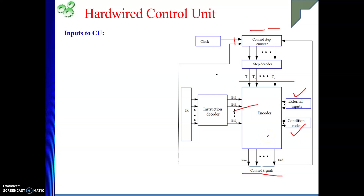Hope this part is clear. Basically in hardware control unit, we are generating the signals with the help of hardware, and those hardware components are interconnected. This is how they become faster. To the hardware, you simply provide the input — whenever the situation occurs, instantly the signal will be generated. Whenever you are executing ADD instruction and you are in step number 7, directly the ZDN signal will be generated without needing to think of anything. So in that sense, it is faster. But the point is, it is not flexible — relatively inflexible.